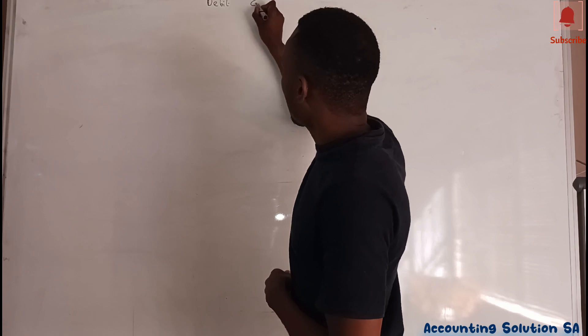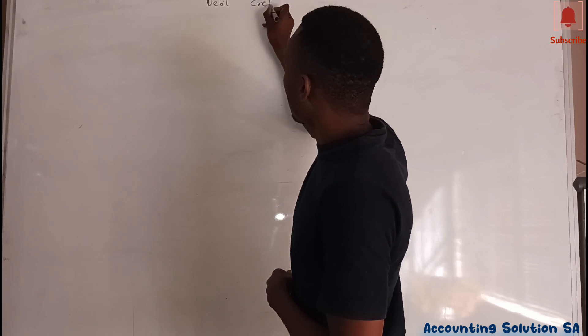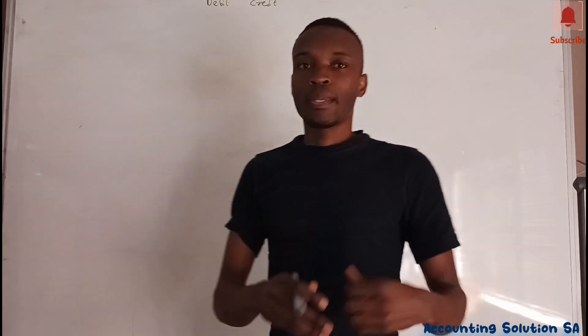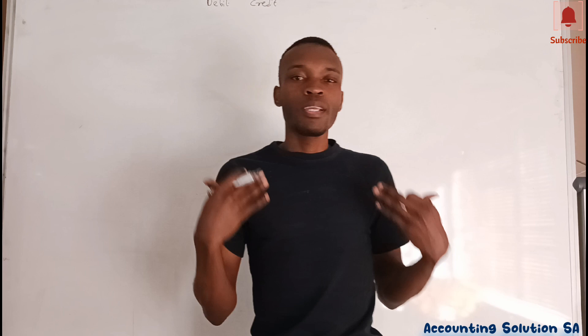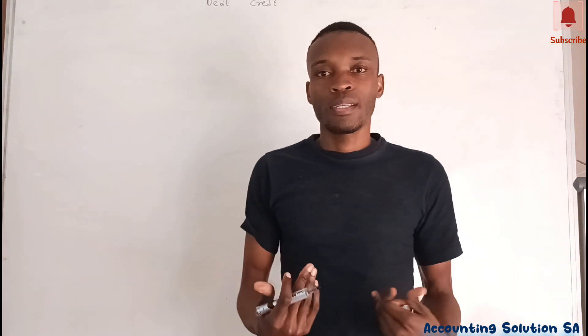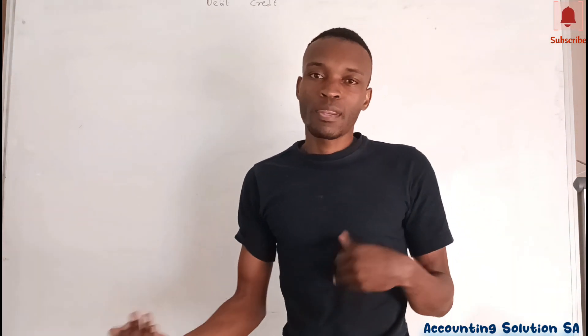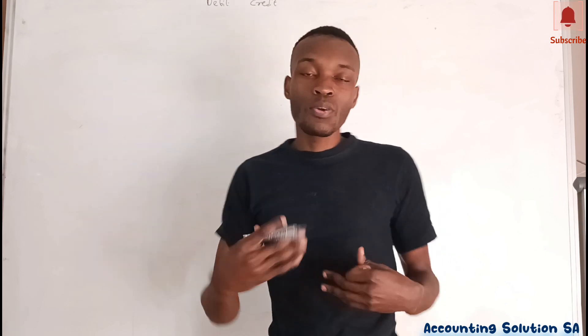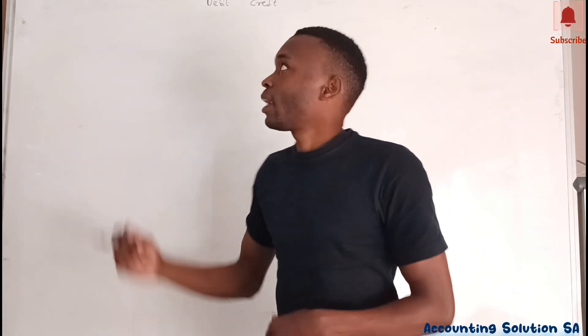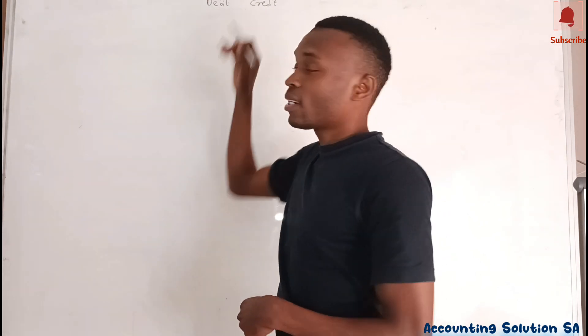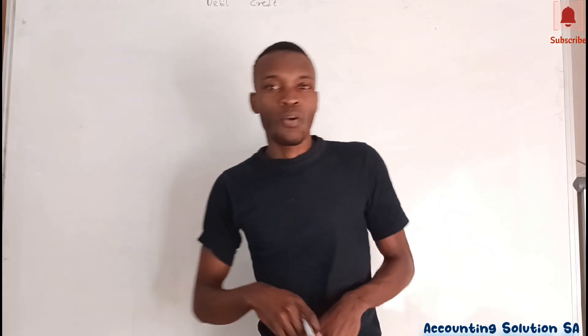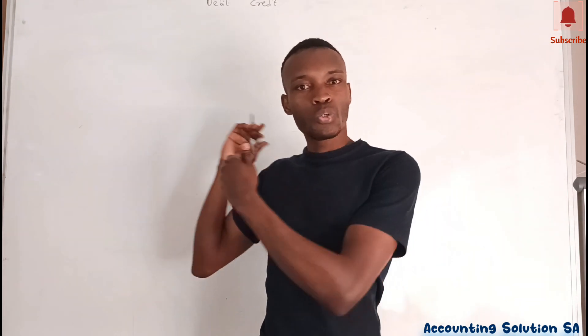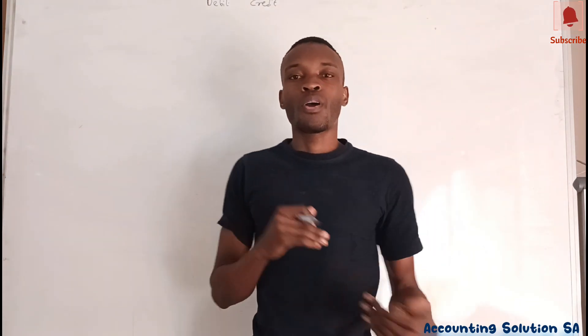Debit and credit. When you are preparing your ledger account, your debit side is always on your left and the credit side is always on your right side. How does this two-column account work? It's very simple.